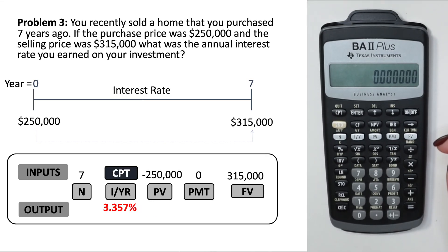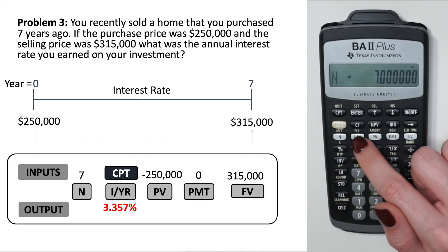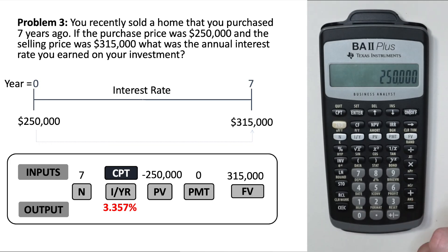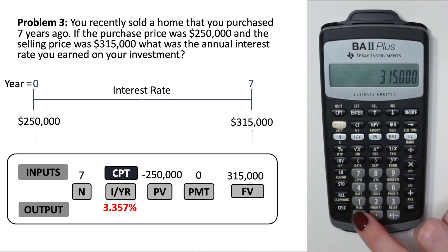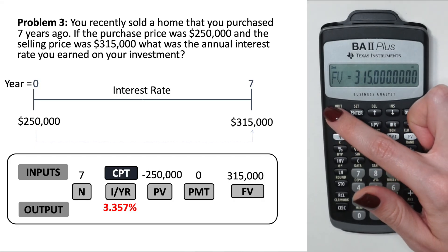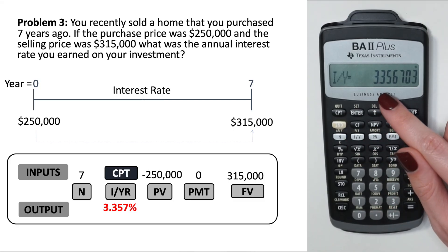For the last single cash flow example: you sold a home purchased seven years ago for $250,000, selling for $315,000 — what is the annual interest rate? After clearing, set N=7. The interest rate is what we're solving for. PV=$250,000 made negative, set as present value. Leave payment alone. FV=$315,000. Quit out, hit Compute, then click the percentage button — the answer is 3.36%.